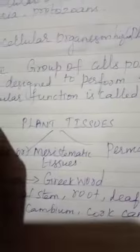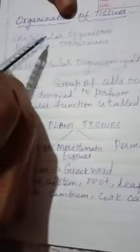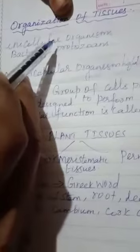In our surroundings, so many organisms are there. There are two types of organisms: unicellular organisms and multicellular organisms. A unicellular organism is a single-celled organism — made up of a single cell structure. For example, bacteria and protozoans.